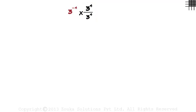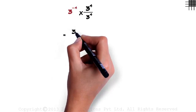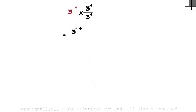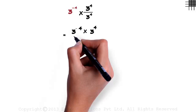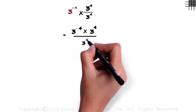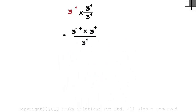That equals 3 raised to minus 4, multiplied by 3 raised to 4, divided by 3 raised to 4. We multiply this with this and divide it by this.